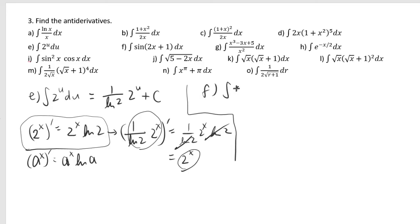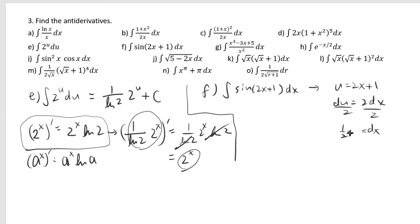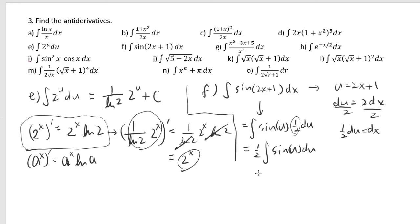For part f, the integral of sin of 2x plus 1 dx. You need u equal to 2x plus 1, where du equals 2 dx. Dividing by 2, dx equals 1 half du. So the integral becomes the integral of sin of u times 1 half du. Pull the 1 half out as a constant. Since differentiating negative cosine gives positive sine, the antiderivative of sin of u is negative cosine. Substituting back, u is 2x plus 1, so the answer is negative 1 half cosine of 2x plus 1 plus c.